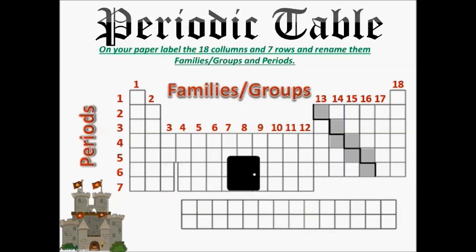For your first action item, label the 18 columns and the 7 rows on your paper and name them families and periods. Families — also written as groups — are the vertical columns that move up and down. Periods are the horizontal rows that go across the periodic table.